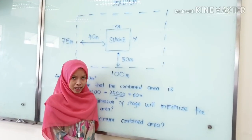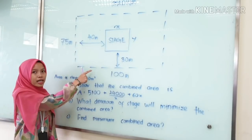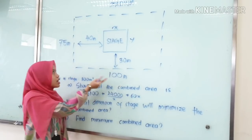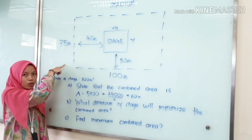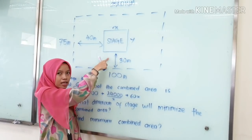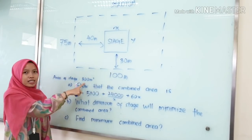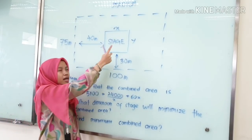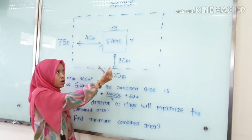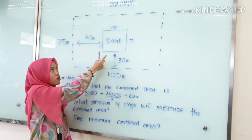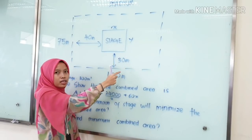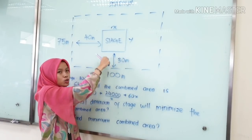My name is Meliana Biti Abdul Halim. The diagram shows the area of a stadium with 100m length and 75m width. At the center of the stadium, it has a stage with an area of 300 square meters. The length of the stage is X and the width is Y. The stage is surrounded by 40m length on the two sides and 30m width on the other two sides.